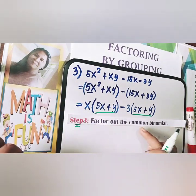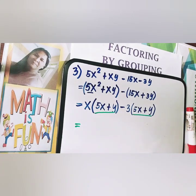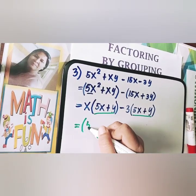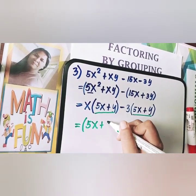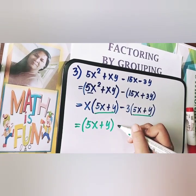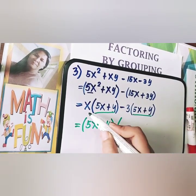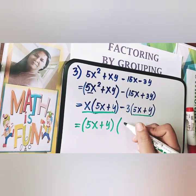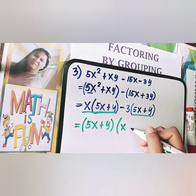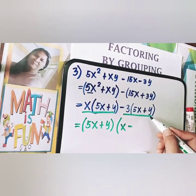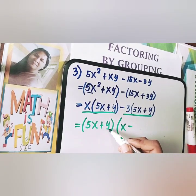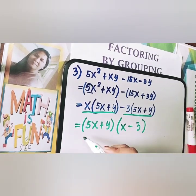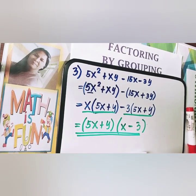Factoring out the common binomial 5x plus y: the first term divided by (5x plus y) gives x. So our final answer is (5x plus y)(x minus 3).